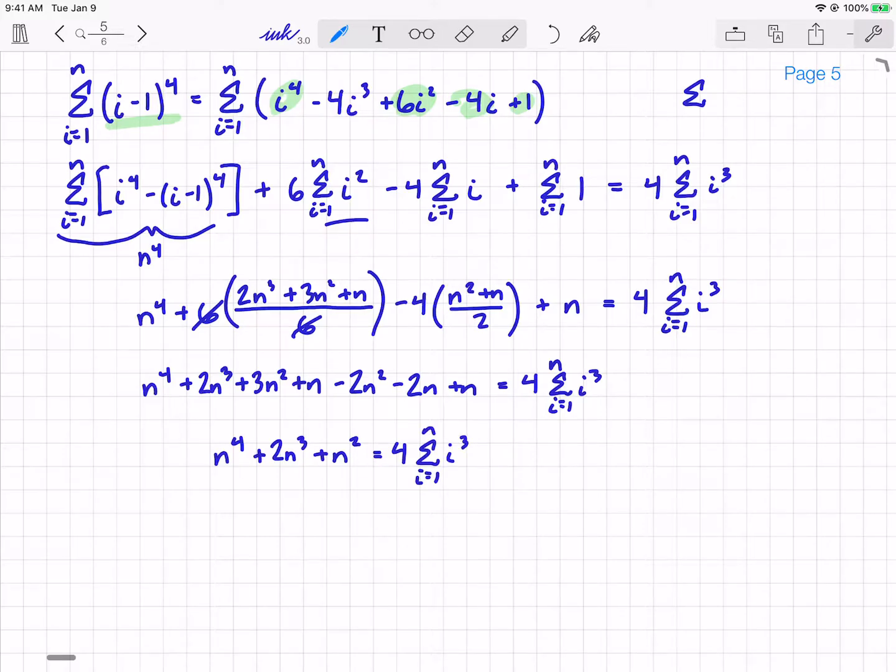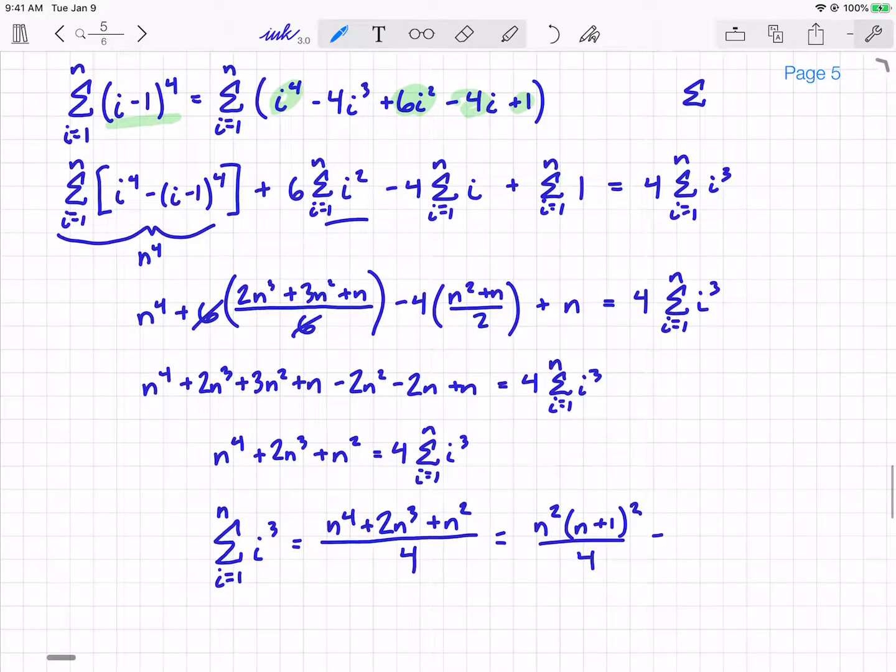And then lastly, divide by 4, and you're going to get your fantastic formula for the summation of i cubed from 1 to n. And that is (n to the 4th plus 2n cubed plus n squared) all over 4. Now that simplifies to be n squared times (n+1) squared over 4, which if you're an astute student with wonderful observation skills, you'll notice that this is equal to the sum of i from i equals 1 to n, that quantity all squared.